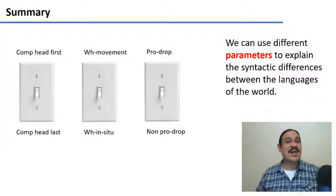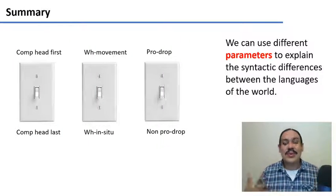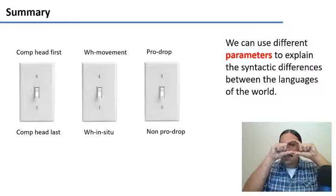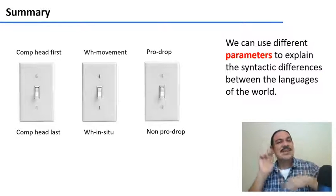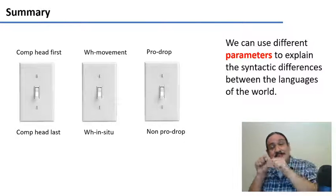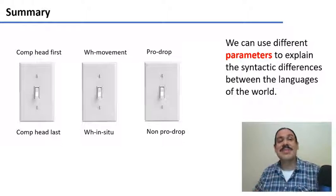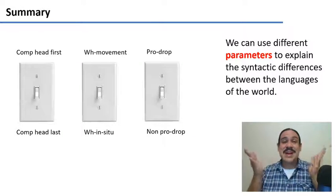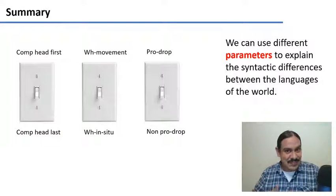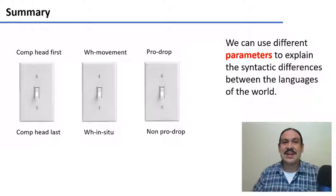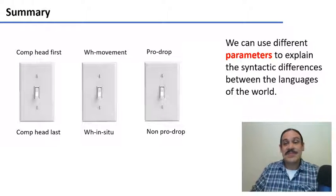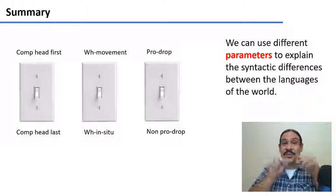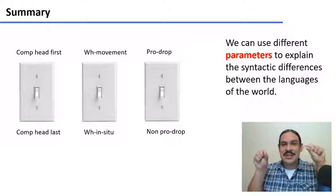If you were analyzing these languages, you'd think that essentially all languages are the same, except that there are some key switches that are set in one direction or the other. So some combination of the switches makes English, some combination of the switches makes Spanish, some other combination makes Japanese. But deep down, they're all the same. This is the main idea behind generative syntax, that all of the structures are extremely similar, except for a few variations in their arrangements.